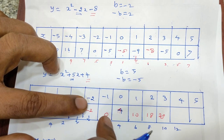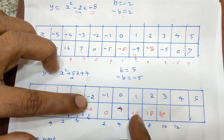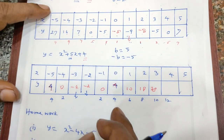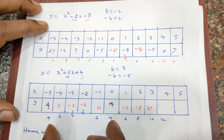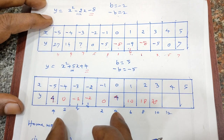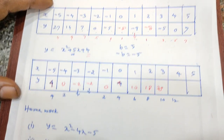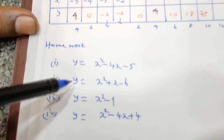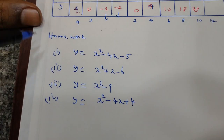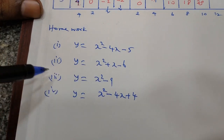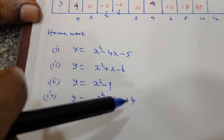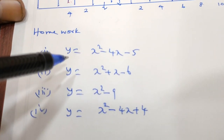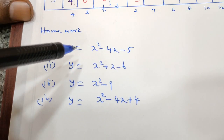2 add 0, 4 add 4, 6 add 10, 8 add 18, 10 add 19. That is a very easy method. If you like and share it, you can do it. Homework: try it. 1 equal to x squared minus 4x minus 5, 1 equal to x squared plus x minus 6, 1 equal to x squared minus 9, 1 equal to x squared minus 4x plus 4.